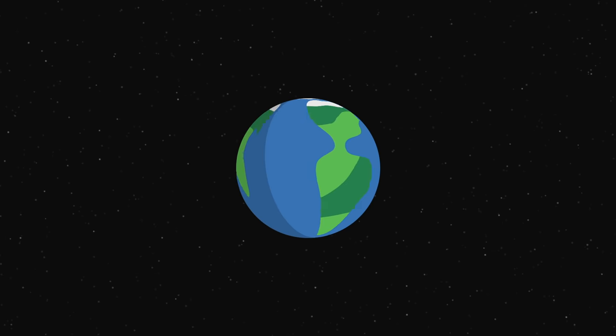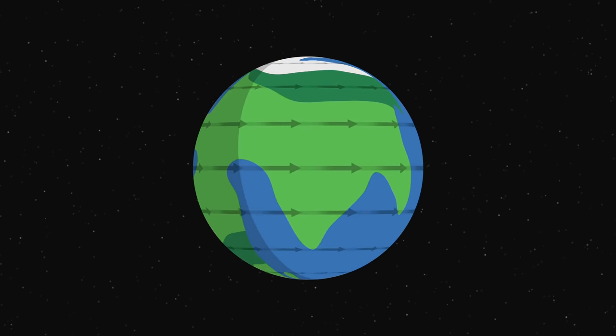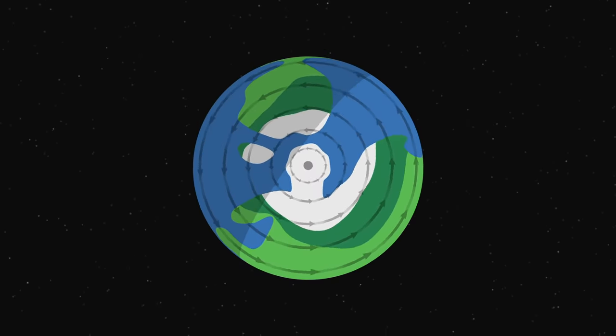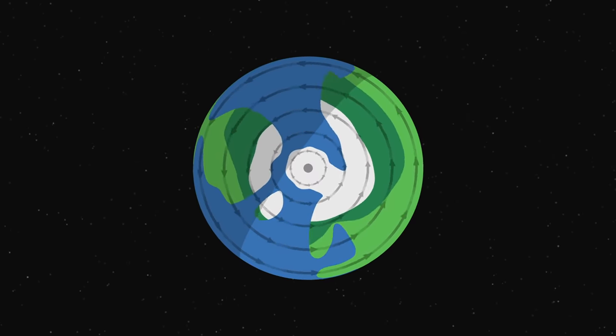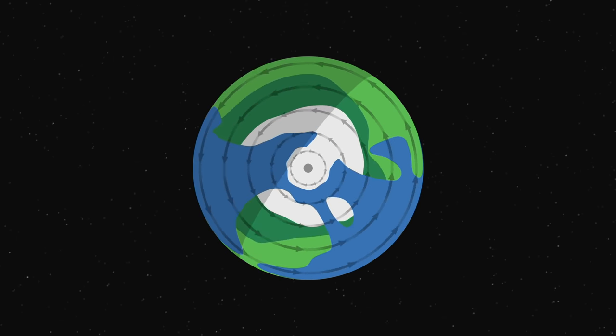Indeed, the Earth spins on itself once every day. On its surface, we are driven by its rotation and the objects that are close to the poles move slower than those close to the equator. The Coriolis effect hence applies at the scale of the planet.